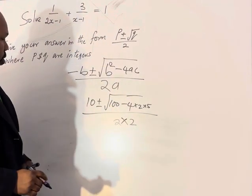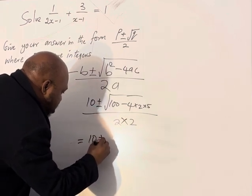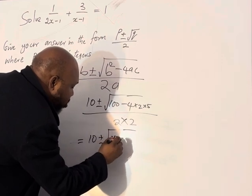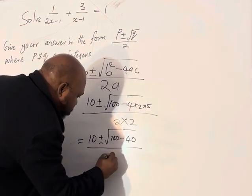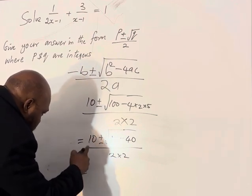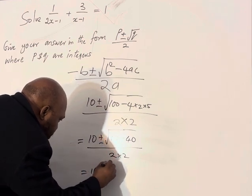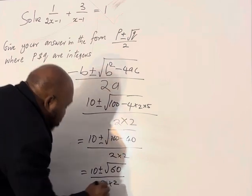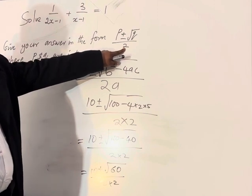This gives us 10 ± √(100 - 40) over 2×2. That equals 10 ± √60 over 2×2. I'm always doing this 2×2 because I want to make sure we have only 2 here.